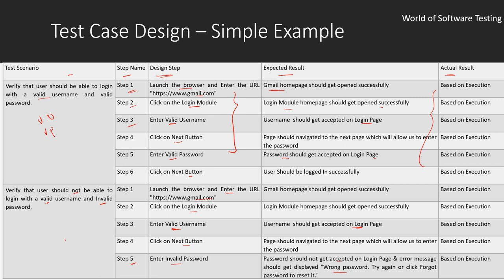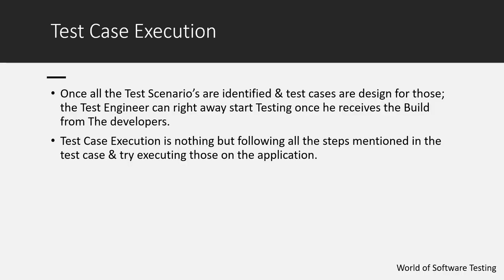We can have two more cases as well — invalid username with valid password, and invalid username with invalid password — making the four conditions for which we can write test cases. This is the standard format, and it may vary column by column depending on the organization, but these are the common elements. Once the test case design is completed, we move to the test case execution part.